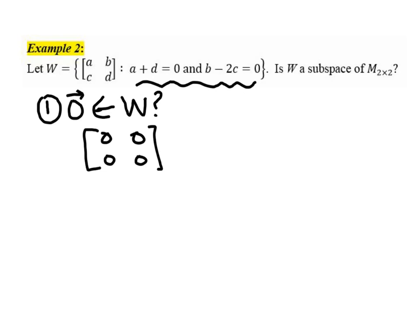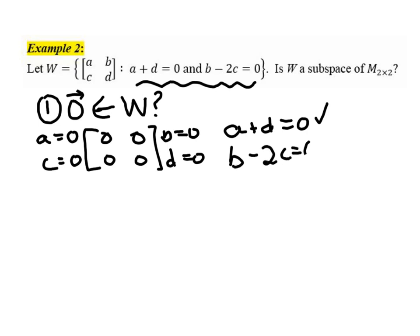So in this case, A is 0, B is 0, C is 0, D is 0, you get that, just kind of matching up the entries here. So is A plus D equal to 0? Yes, that'd be 0 plus 0. And is B minus 2C equal to 0? Yes, because that would be 0 minus 0. So yes, the 0 vector does belong in W.